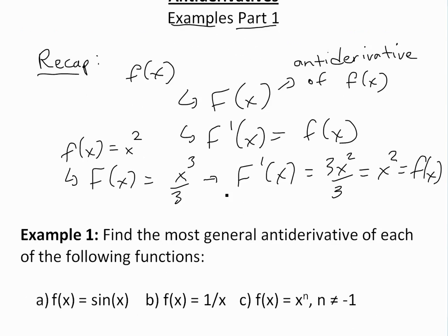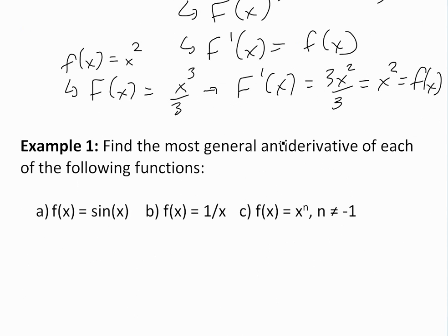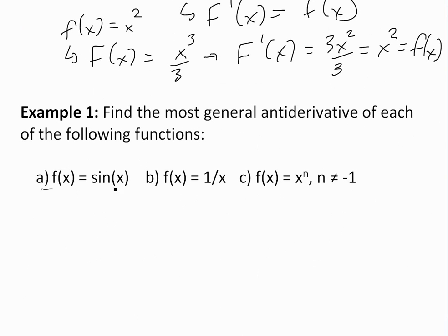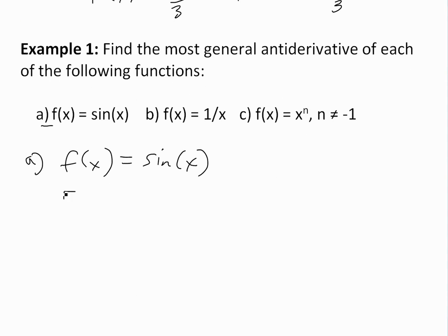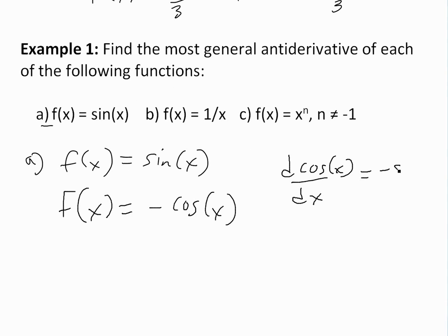Now let's look at Example 1. Find the most general antiderivative of each of the following functions: a) sin(x), b) 1/x, c) x^n. For part a, f(x) = sin(x). We need to find a function whose derivative equals sin(x). Recalling our derivatives of trigonometry, the answer is F(x) = −cos(x), because d/dx[cos(x)] = −sin(x). We put a negative in front, the negatives cancel, and the derivative equals sin(x) = f(x).